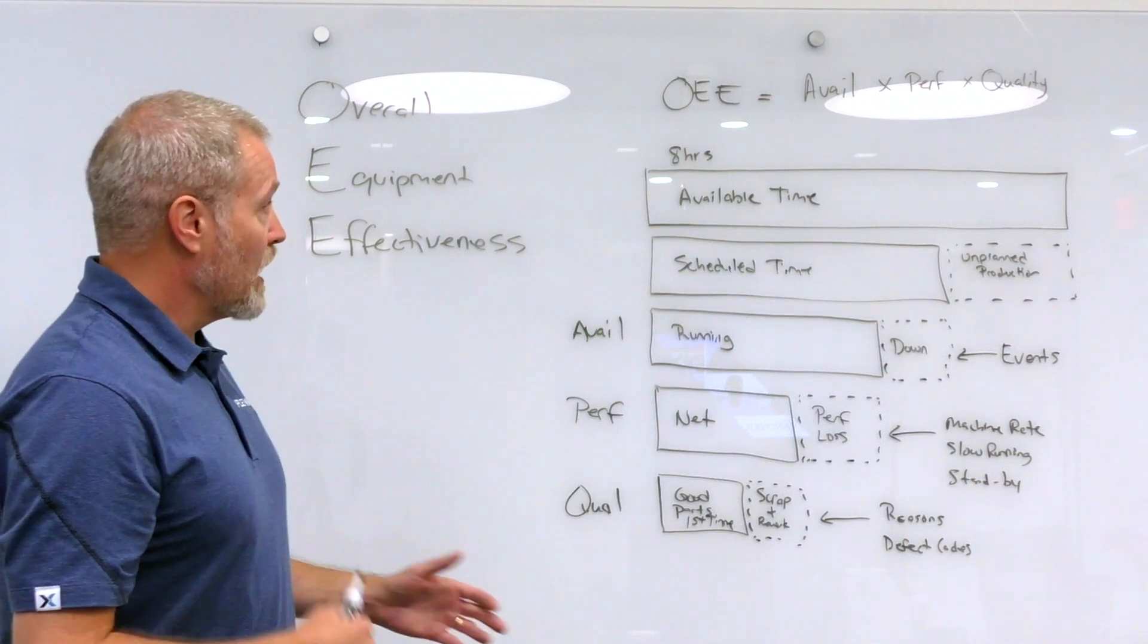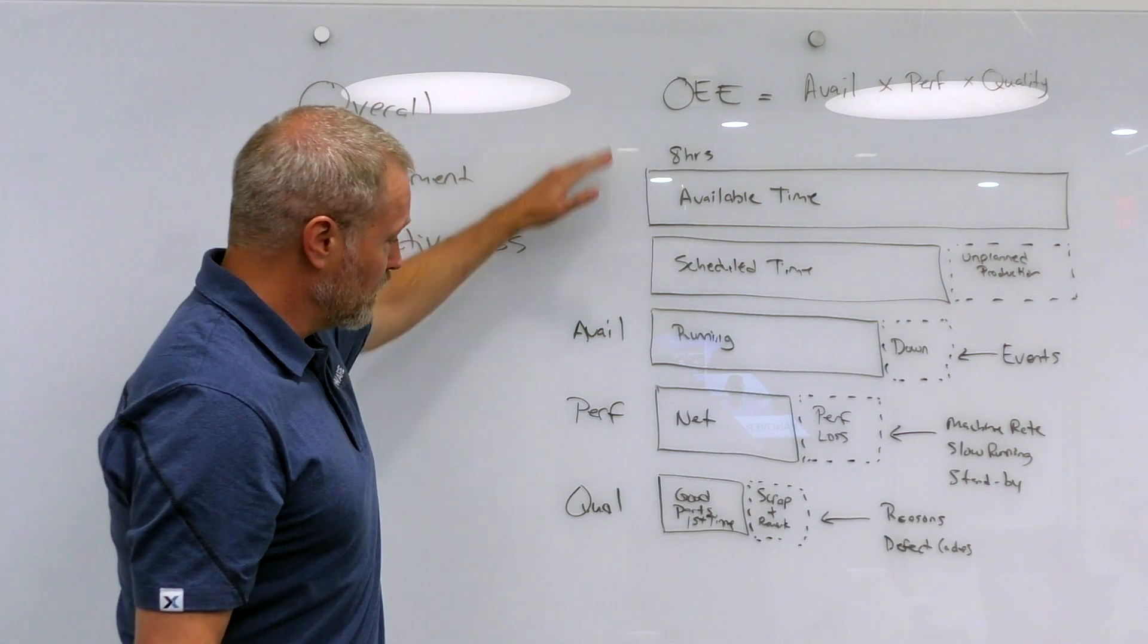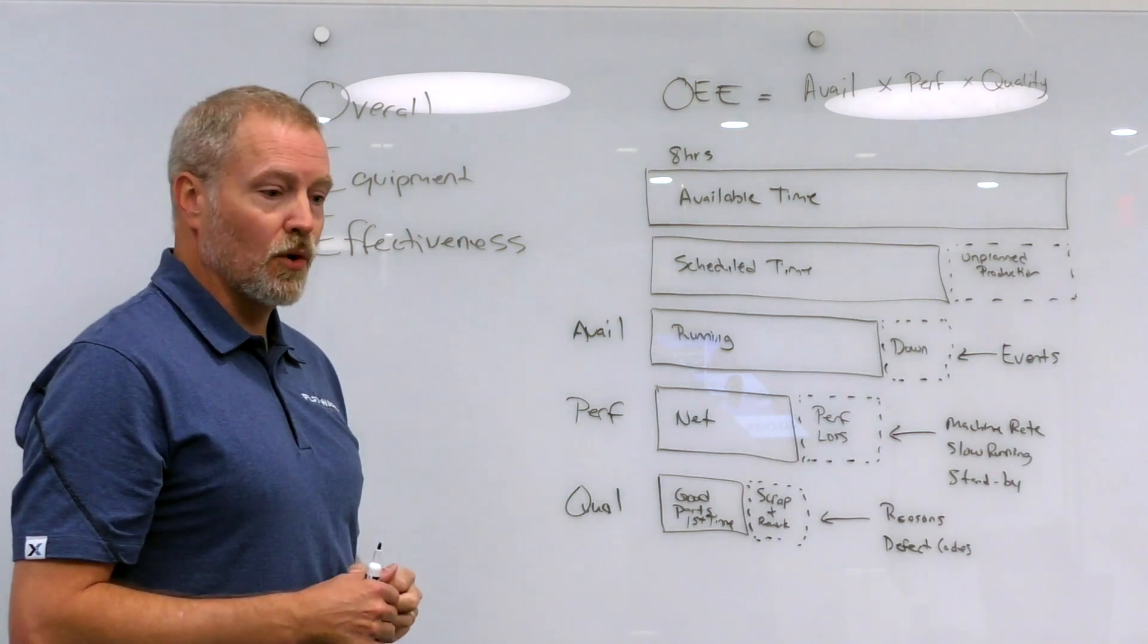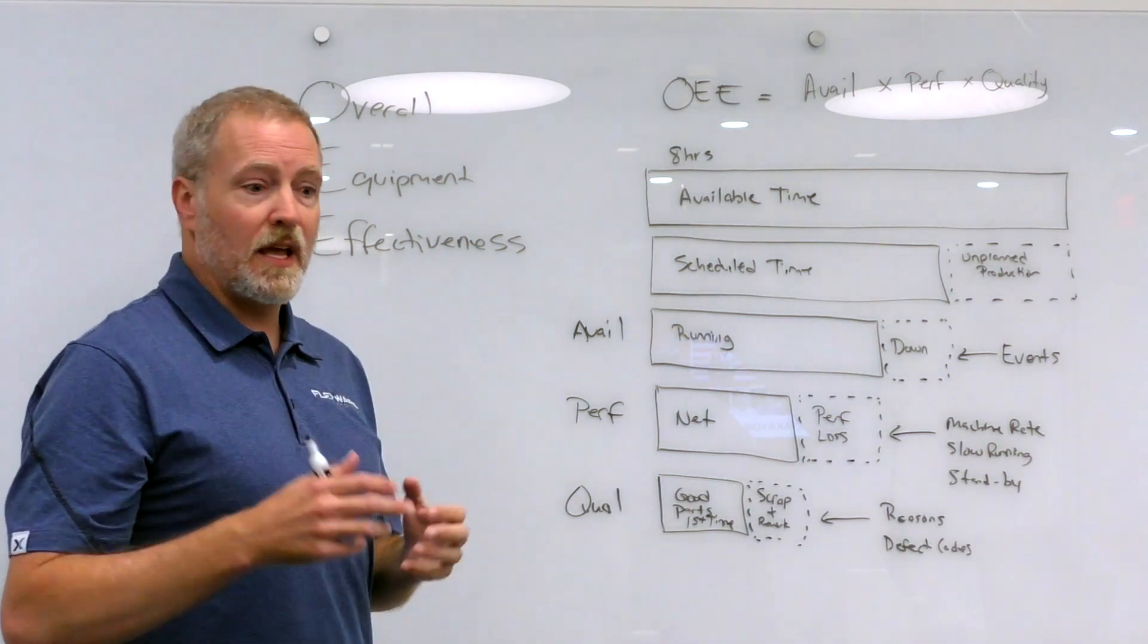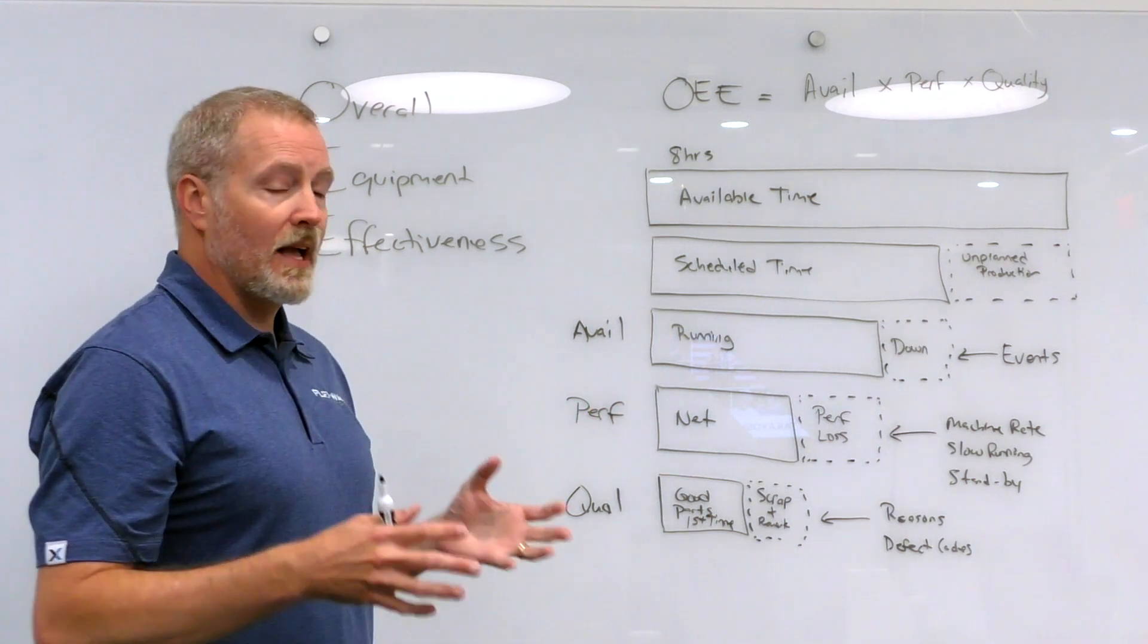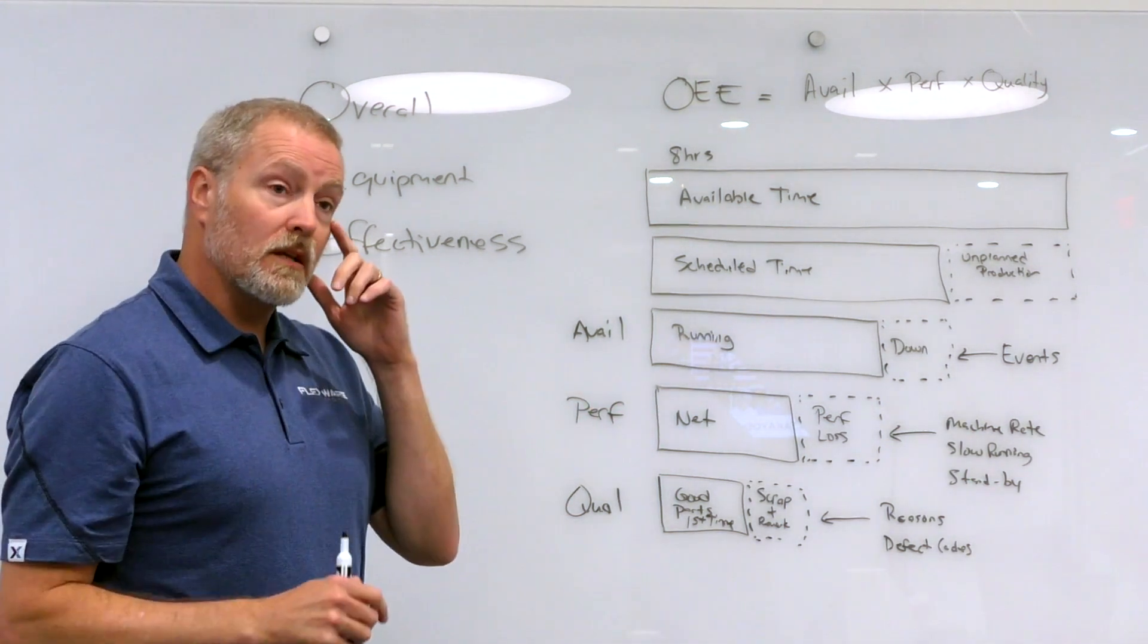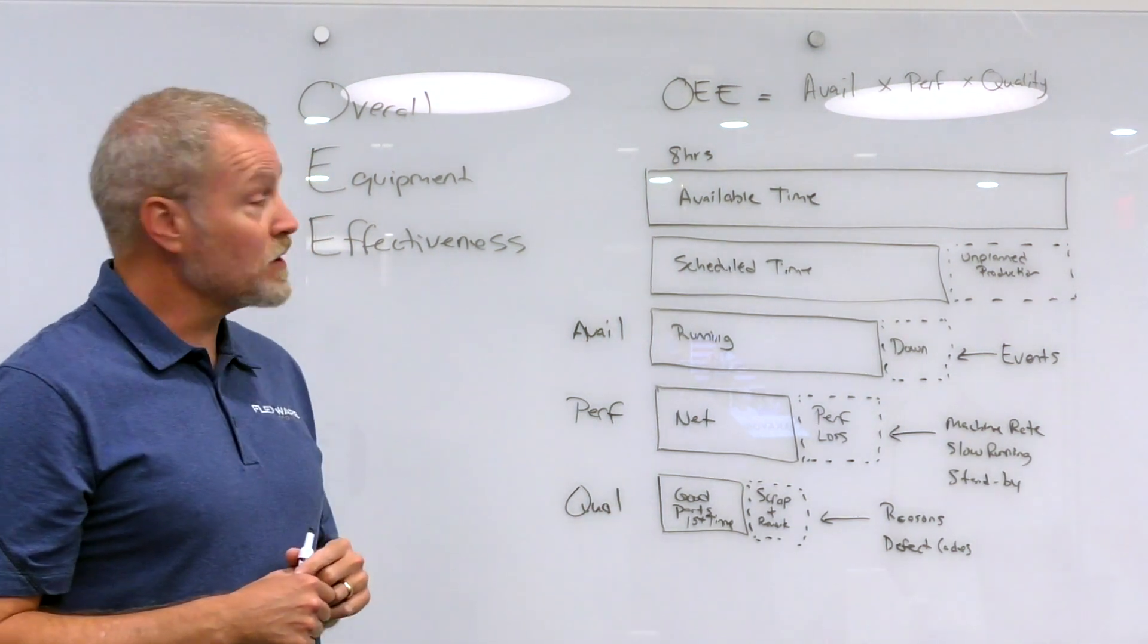To summarize, OEE is a high level metric that considers a couple of factors. Ultimately, it's a great benchmarking tool. You can compare yourself shift over shift, day over day, month over month. How am I doing? How's this line doing over time? As that number goes up or down, we can try to understand why. What are we changing about the process that allows that number to shift?